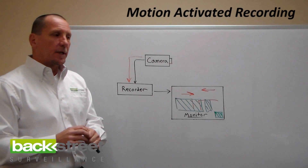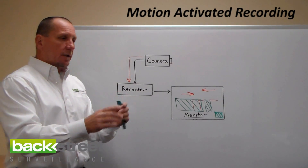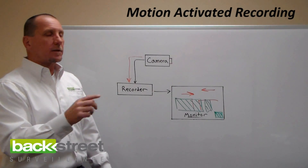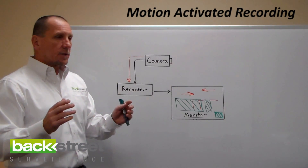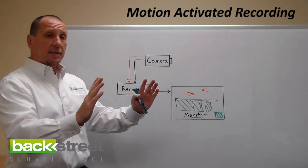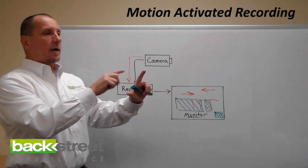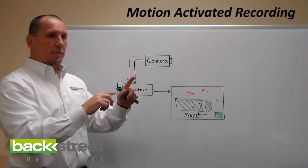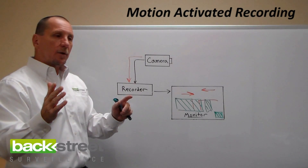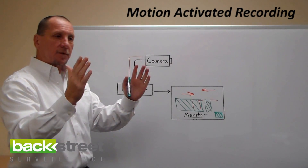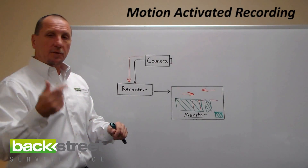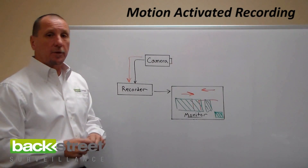Playback is efficient because you're not sitting there fast-forwarding through hours of empty footage. With our systems, you select the cameras you want to play back, and you can play multiple cameras simultaneously on motion-activated mode. You're watching all cameras at once — when there's movement, one or two cameras start playing and others don't. When you see what you're looking for, you click that camera, it goes full screen, you can start and stop, record it, export it to a thumb drive with a time-of-day stamp, and hand it to the police.